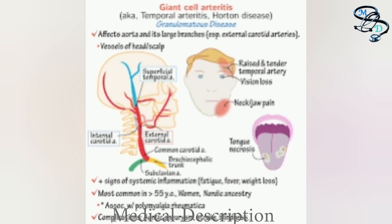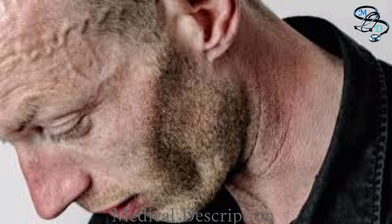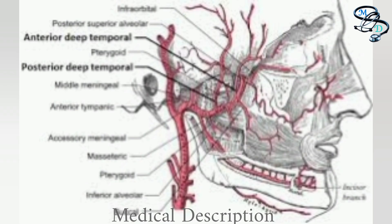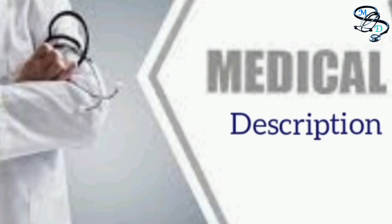A new medication called tocilizumab was approved by the FDA in 2017 to treat temporal arthritis; it is given as a subcutaneous injection. Patients should not smoke and alcohol should be kept to a minimum. The outlook for those with temporal arthritis is very good unless the person has had a loss of vision, as that damage generally cannot be reversed. Most complications are from the use of steroid drugs, not from the disease itself.